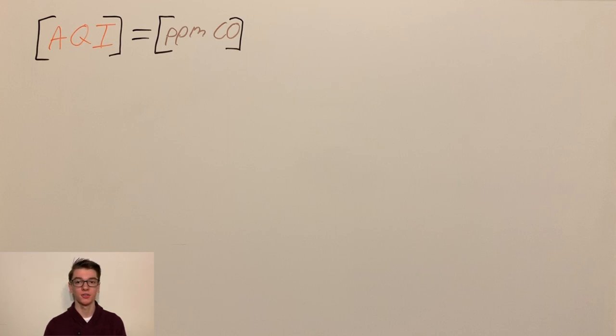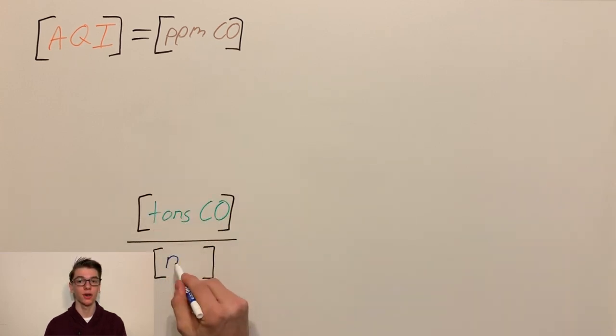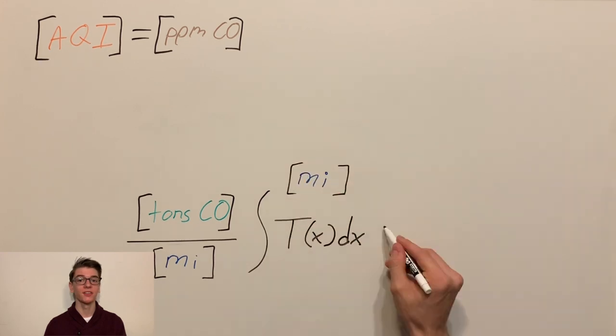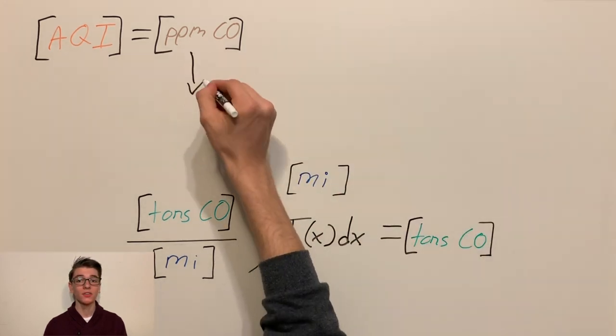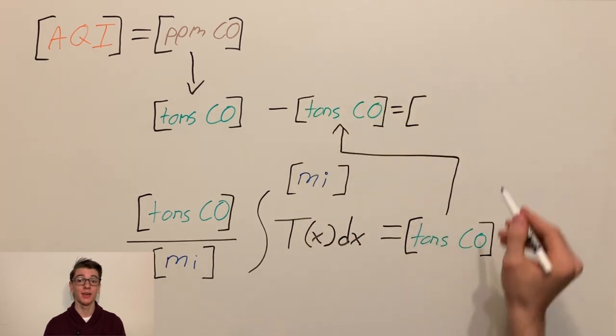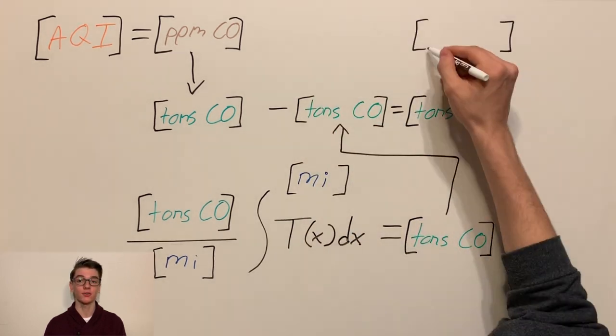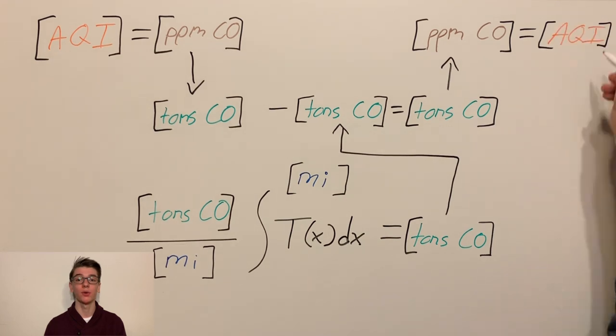To figure out the carbon monoxide emissions, we used a similar approach as before, integrating the truck density and scaling appropriately. We then subtract out these emissions to see what the carbon monoxide concentration would be if all the diesel trucks were replaced with electric trucks, and then convert that to an equivalent AQI.